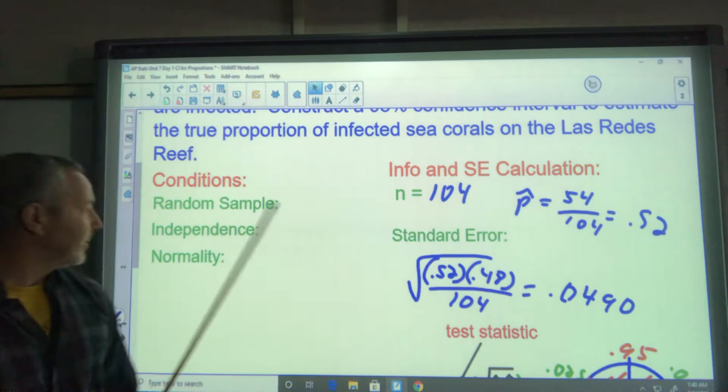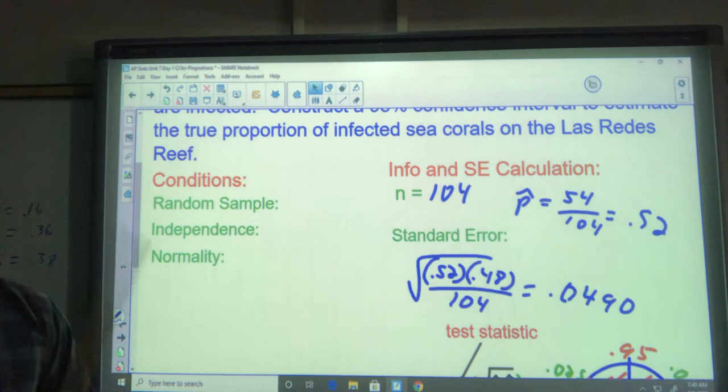Some nice things for you. The conditions are exactly the same: random sample, independence, and normality. Random sample, if it says that, then we just put a check. If it doesn't, we say we assume the coral samples were randomly selected. Independence, we're assuming that the 104 samples are less than 10% of all the coral in the Las Redes Reef.